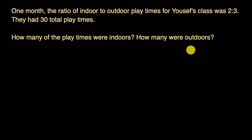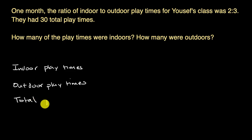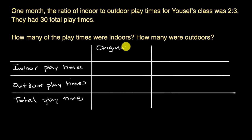Now let's work through this together. I'm going to figure this out by setting up a table. So we have our indoor playtimes, our outdoor playtimes, and our total playtimes. I'm going to set up two columns here: the first column is going to concern itself with the ratios — the original ratio — and here we're going to put the actual counts.